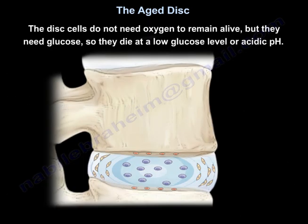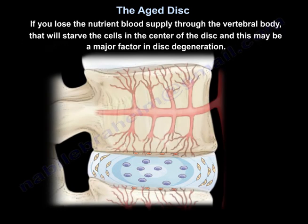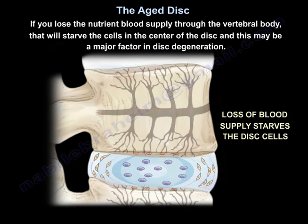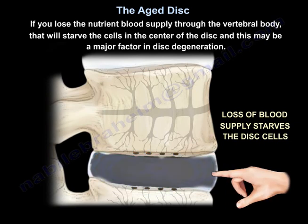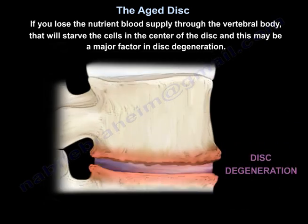Disc cells do not need oxygen to remain alive, but they need glucose — they die at a low glucose level or acidic pH. So if you lose the nutrient blood supply through the vertebral body, that will starve the cells in the center of the disc, and that may be a major factor in disc degeneration.